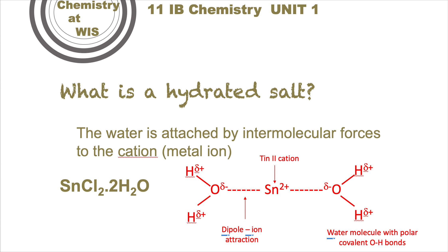If we show the tin 2+ cation in the middle and the structure of water with its covalent bonds and polarity (δ+ on hydrogen, δ- on oxygen, the more electronegative component), the dotted lines represent the intermolecular forces between the dipole on the water and the ion of the tin.